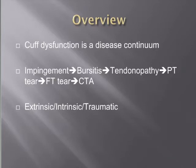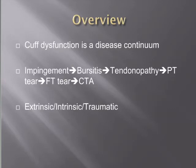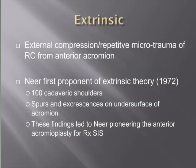There are a number of theories as to the evolution of cuff dysfunction. Initially, Neer was a big proponent of the extrinsic theory, being more of a subacromial impingement type theory. Others disagreed and thought it was more of an intrinsic problem within the tendon that kicked off the cascade of rotator cuff tendinopathy, and there is obviously a traumatic etiology in a few people with an acute traumatic rotator cuff tear. The extrinsic theory revolves around external compression or repetitive micro trauma from the anterior acromion, based mostly on Neer's work in 1972.